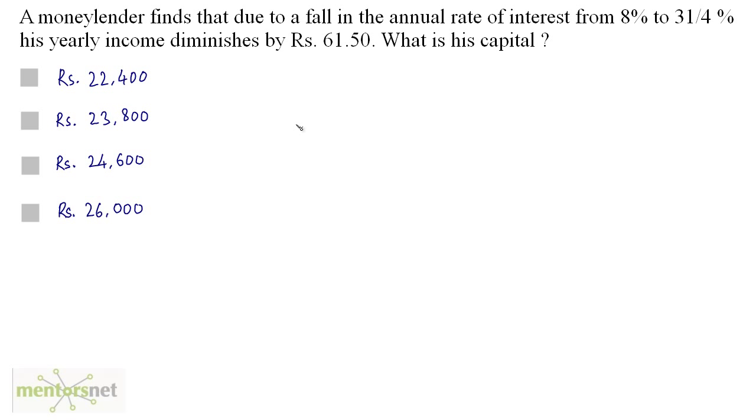Now a money lender always earns his money by interest and it is said that his income diminishes by 61.5. That means that previous interest minus the new interest he is getting right now will be equal to 61.5. Now we can solve this. Let this capital or the principal amount be X Rupees.